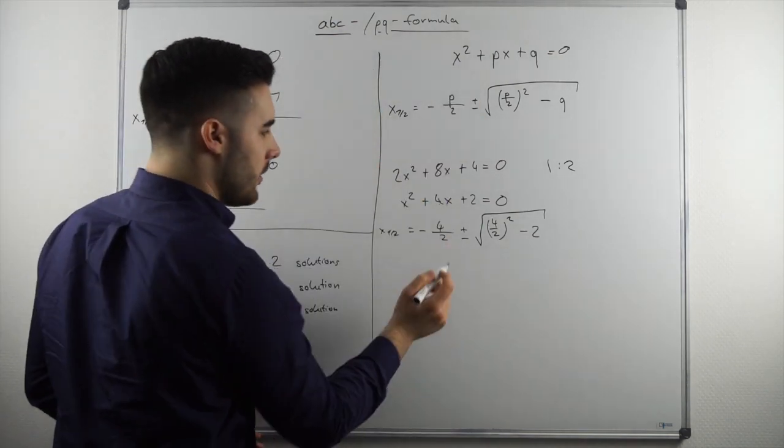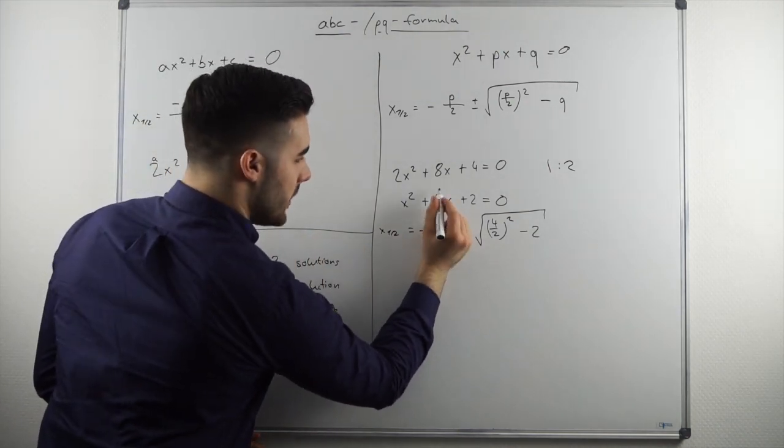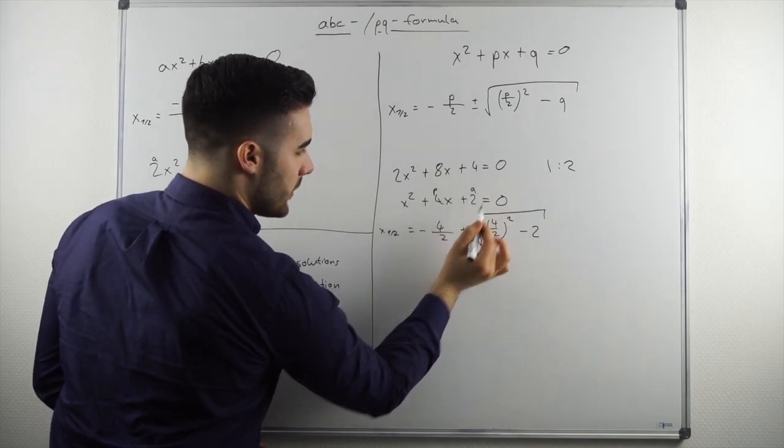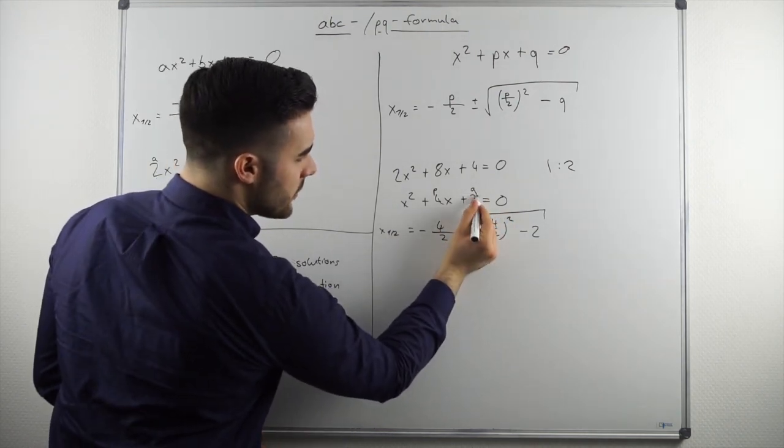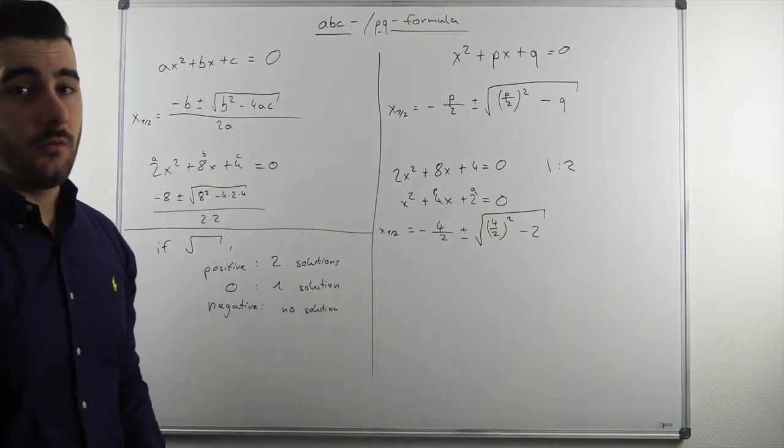And that's about it. So again, just to clarify things as we did also before with the ABC formula. Four in this case would be our P and two would be our Q. You know, this looks pretty much like an egg. So two would be our Q. That's pretty much how you then use the PQ formula.